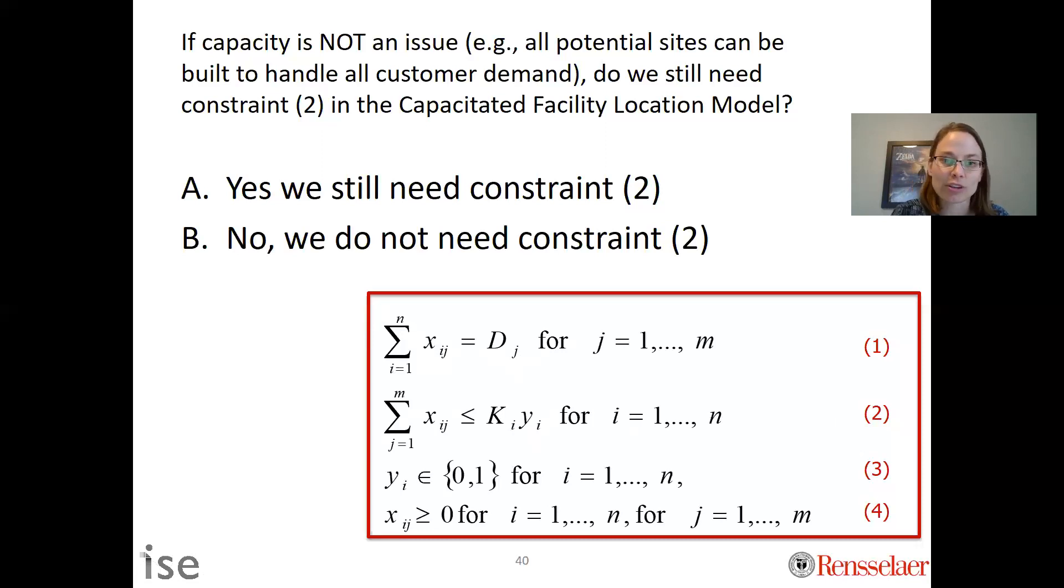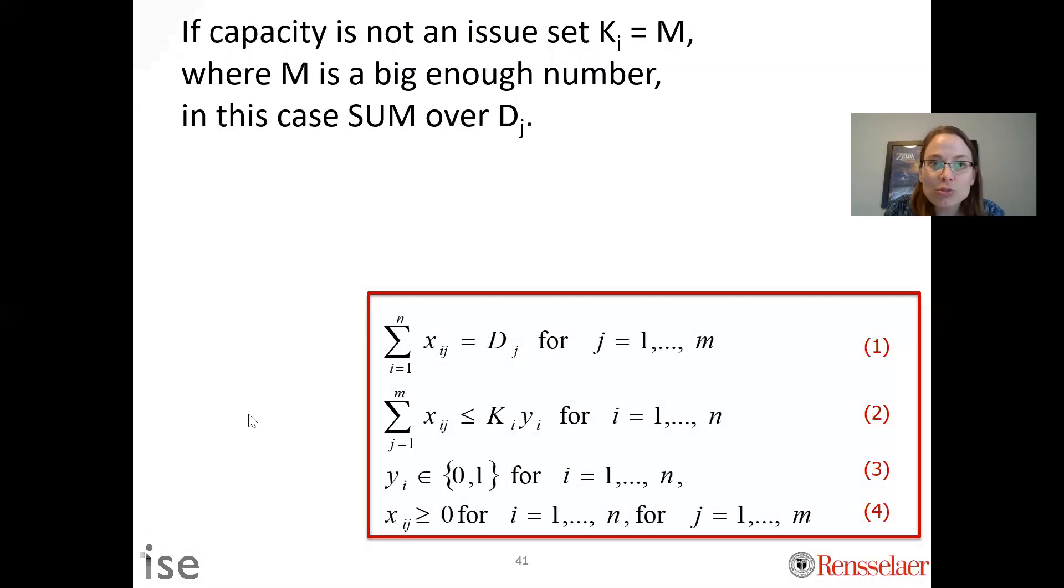The correct answer is yes we still need constraint two. So what do you do if capacity is not an issue? You should set ki to big M, and M is a number that's big enough. It should be a big number from a logical perspective, but from a solving perspective it should be the biggest or the smallest big number you need.